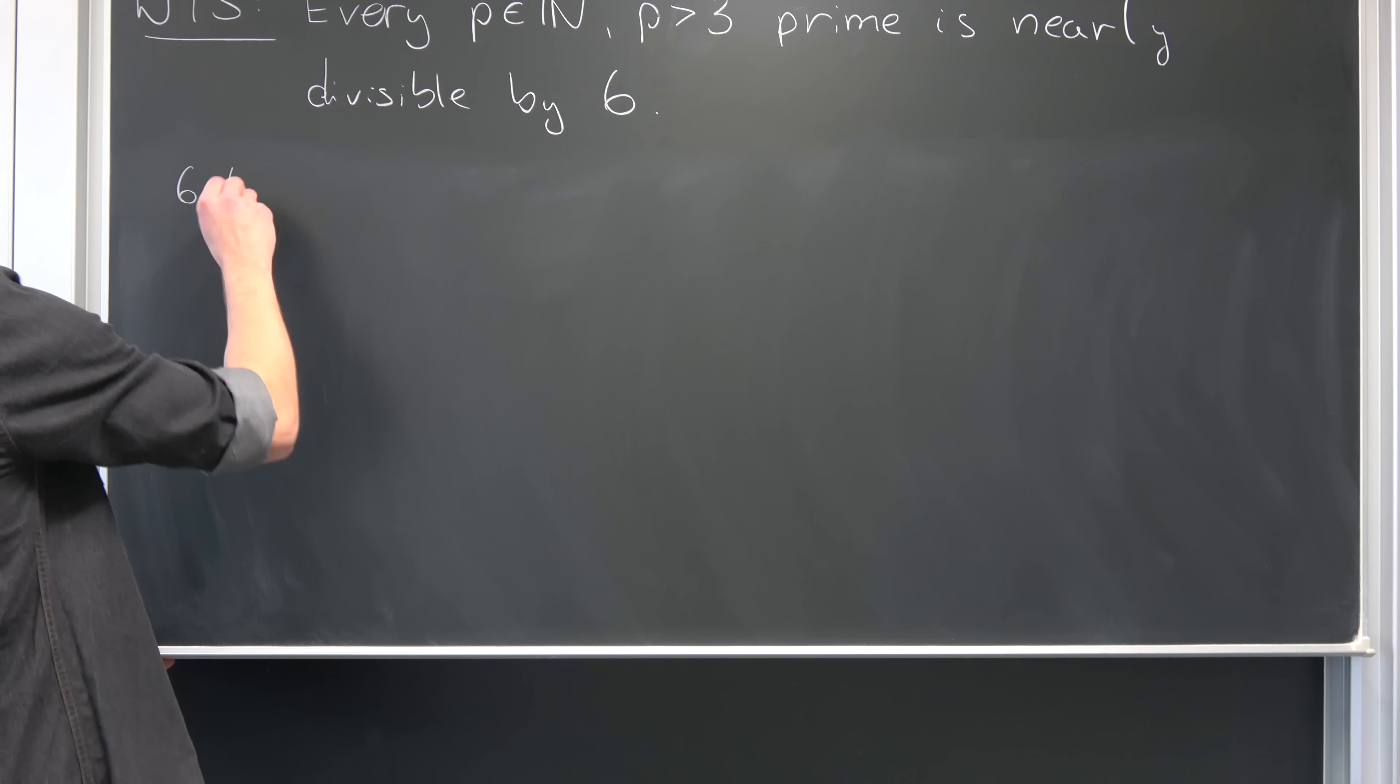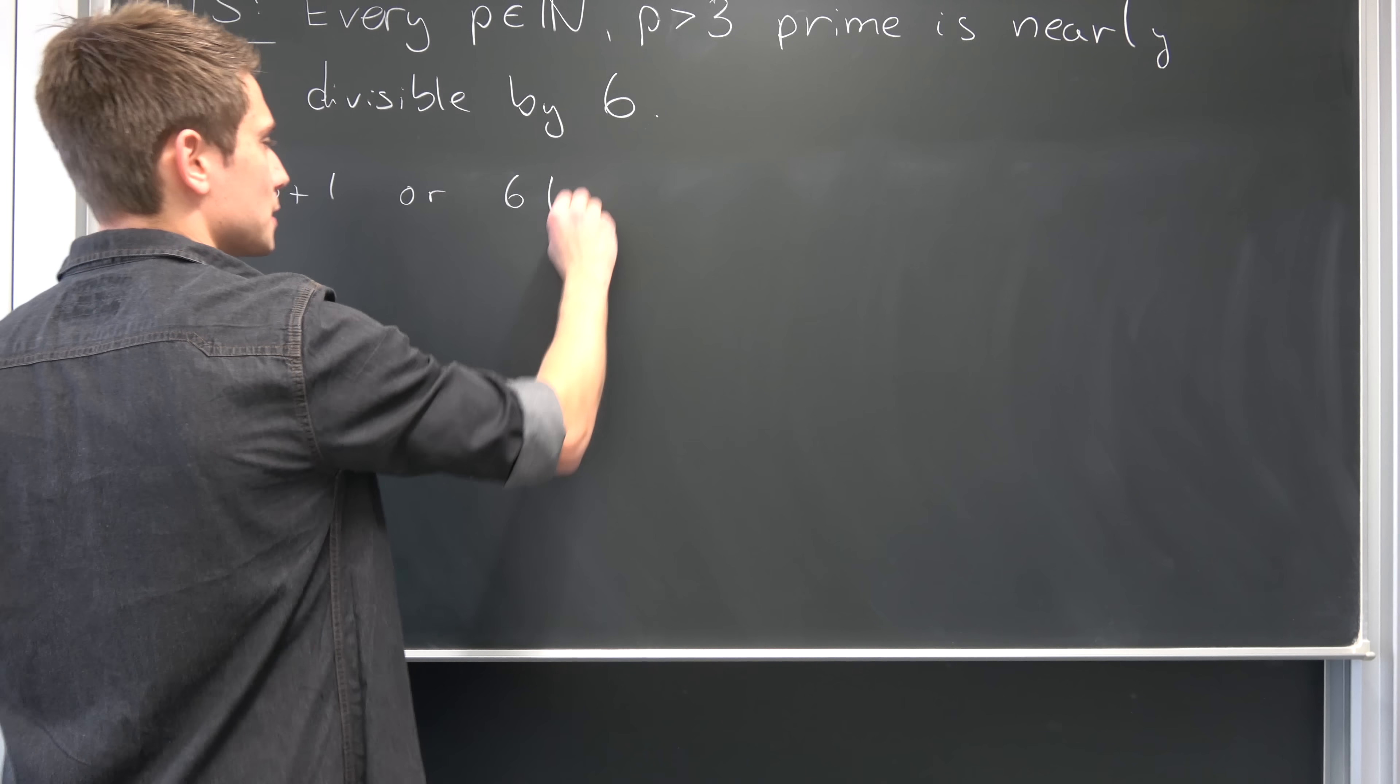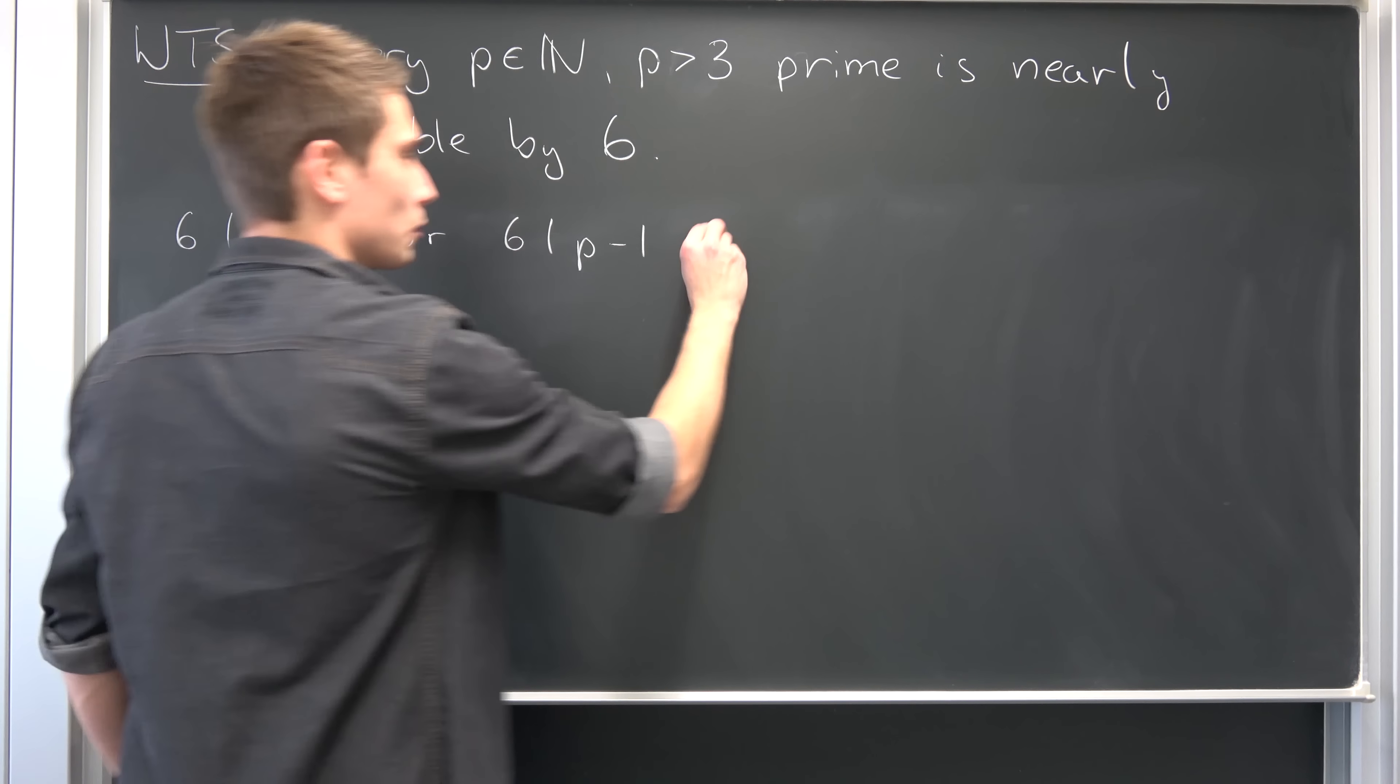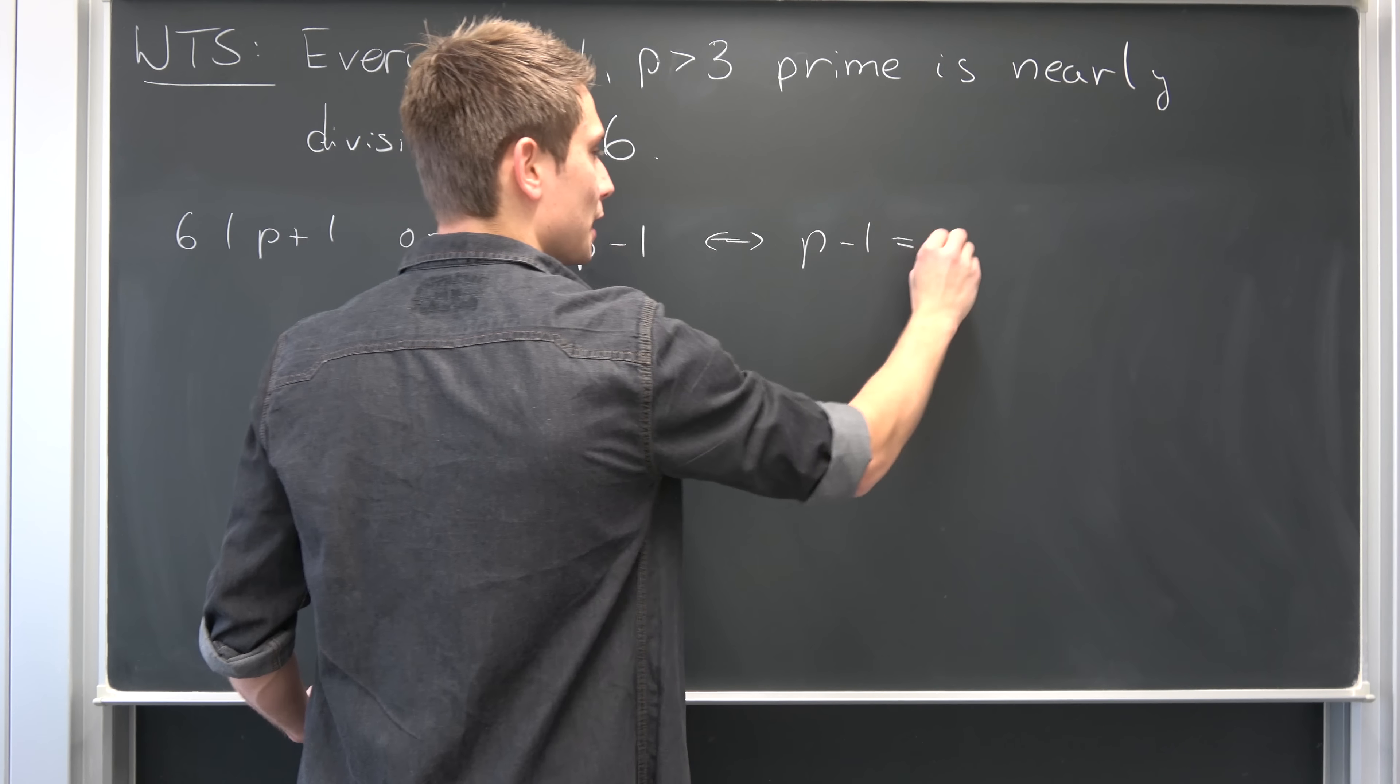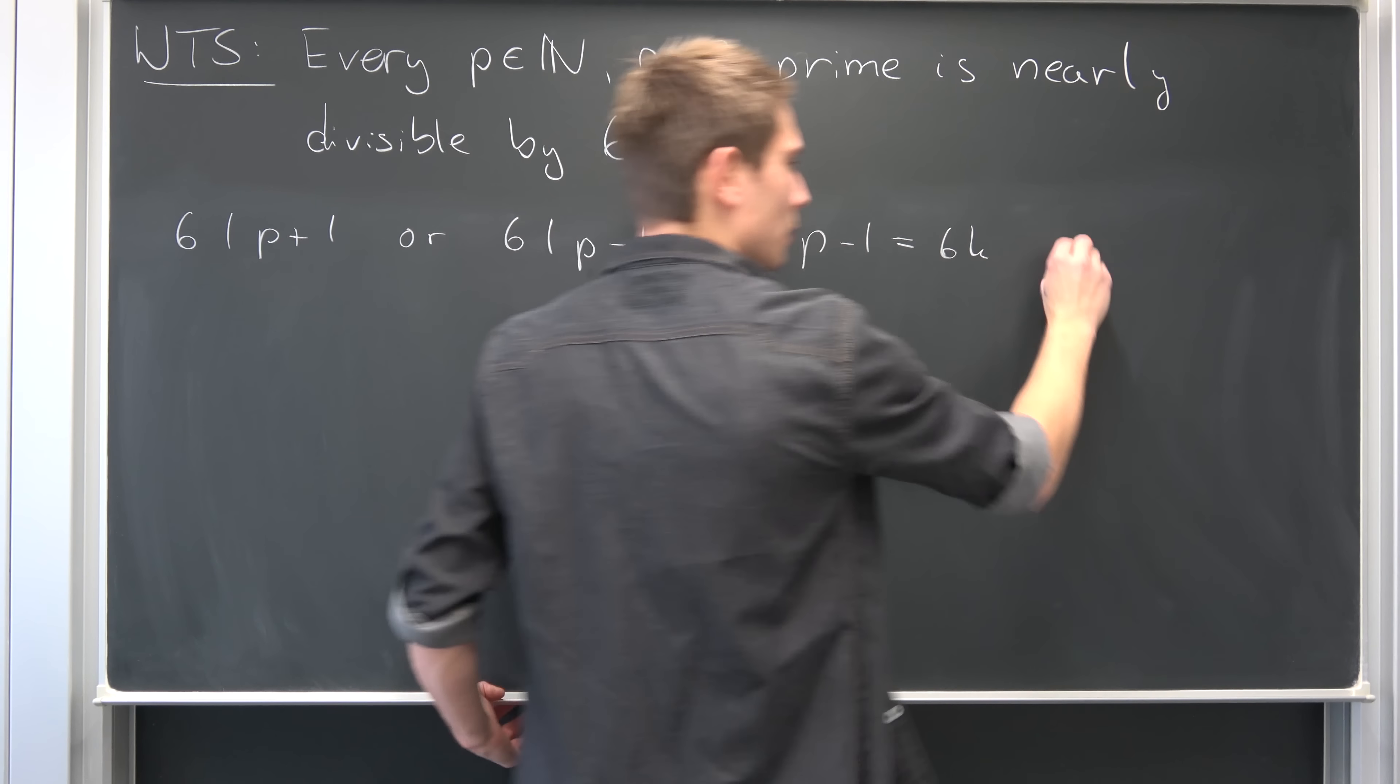You can either have 6 divides p plus 1 or we have 6 divides p minus 1. What does divide mean? It just means that p minus 1 can be expressed as 6 times k, where k is an element of the integers.